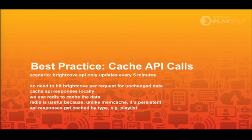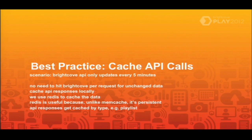With Brightcove's API, since it only updates every five minutes, there's no need to hit Brightcove on every single request when you're just going to get unchanged data. So we cache all that data locally. We store it in a local cache so we're not hitting Brightcove constantly to get what we need. That's why the site is really responsive. What's also nice is that, depending on how you're caching the data, if you store it in a persistent way and there are problems with Brightcove, your site can continue to function.